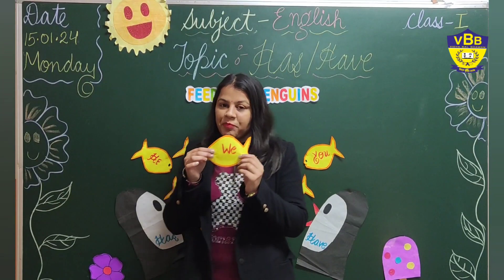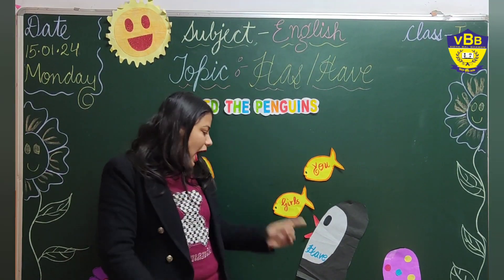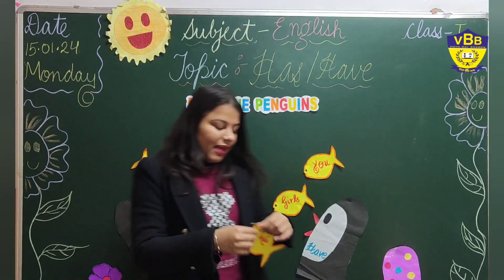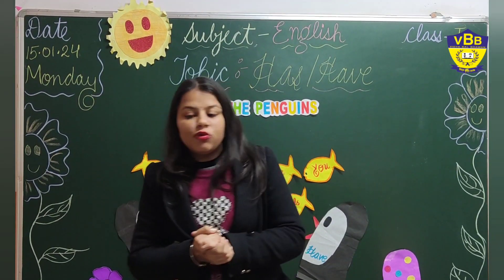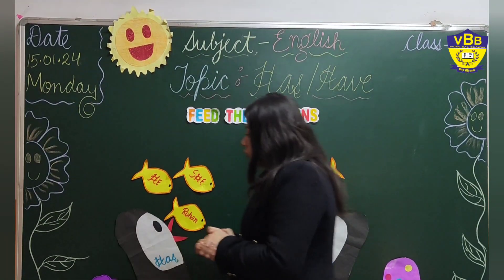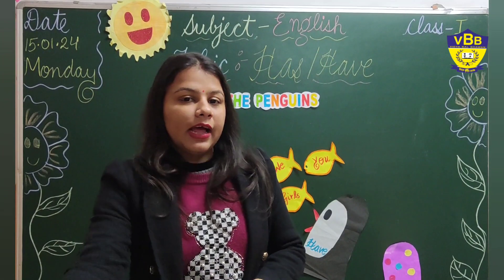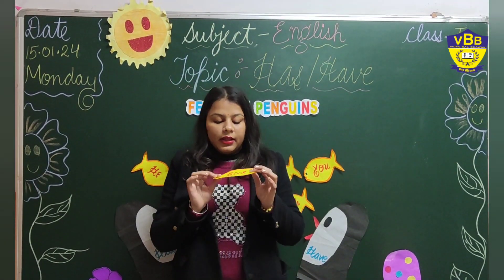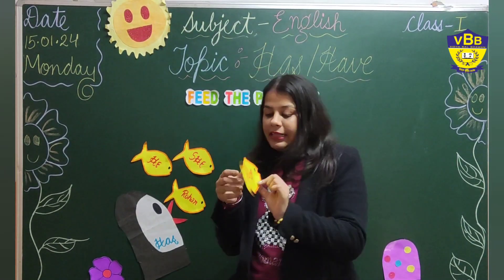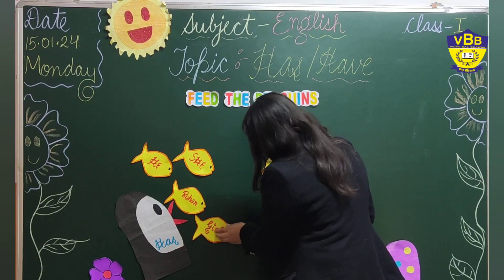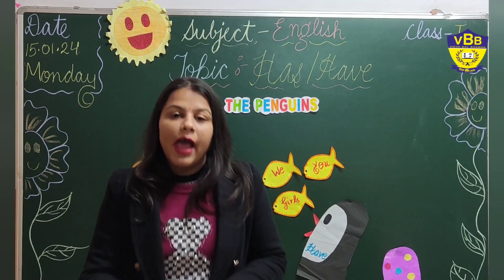Now what is written here? 'We.' So which penguin will eat this fish? The 'have' penguin. So we will paste the fish there. Now let's move to another word — 'girl.' Here we are talking about only one girl. So which penguin will eat this? Yes, the 'has' penguin. The 'has' penguin is eating the fish 'girl.'